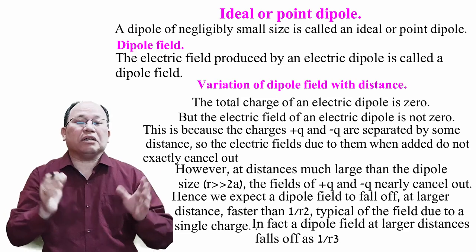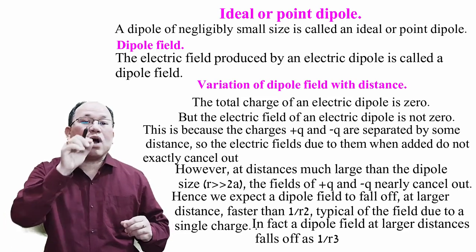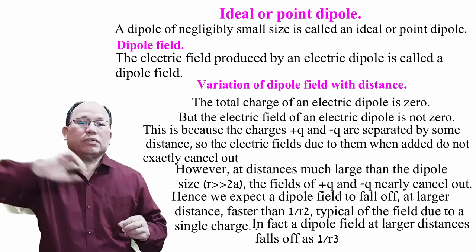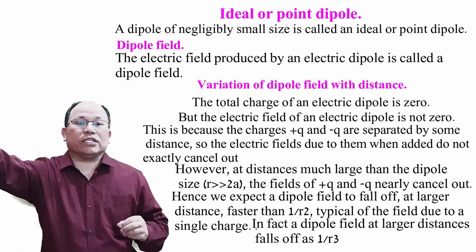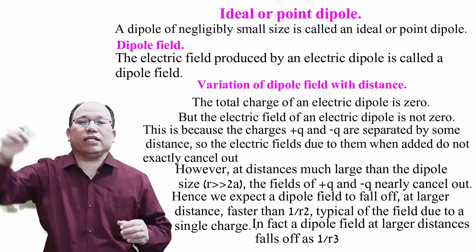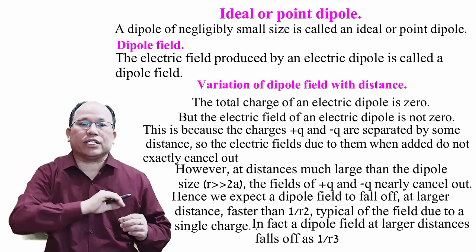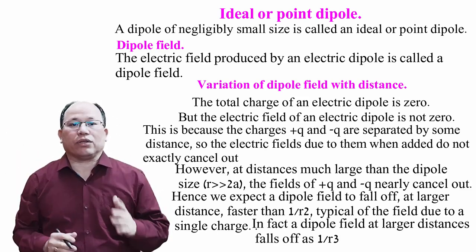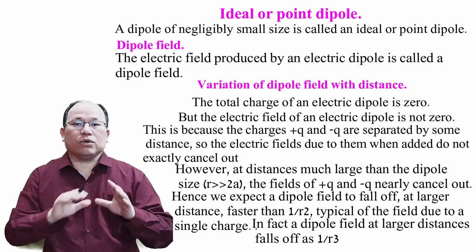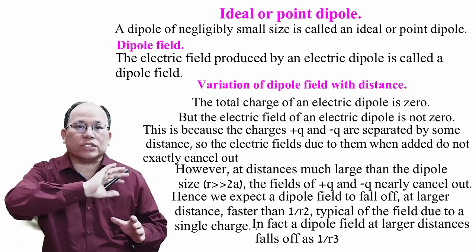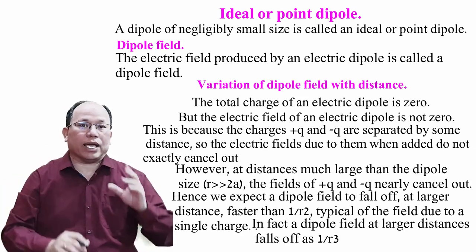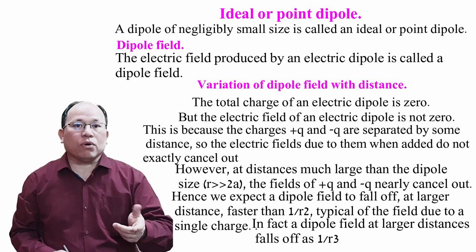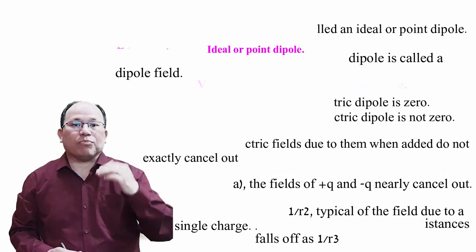The electric field due to a dipole falls as 1/r³ — meaning as we increase the distance, the magnitude of the electric field decreases faster than that of a single point charge, which falls as 1/r². We have now discussed the dipole, electric field due to dipole, and dipole moment.